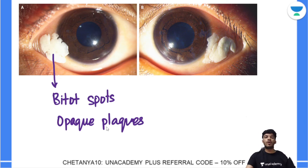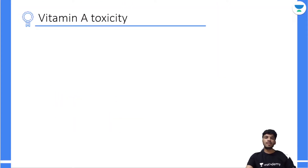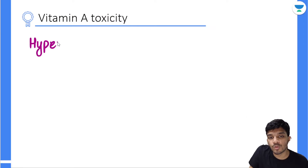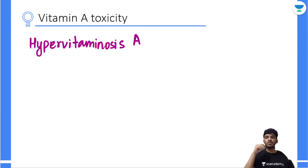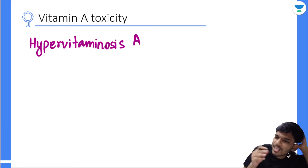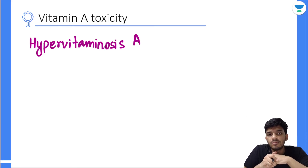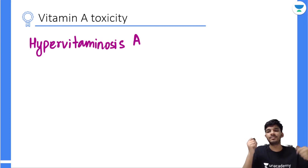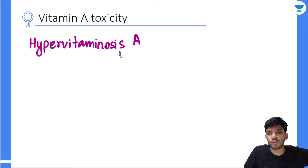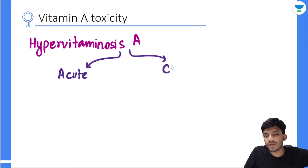That covers Vitamin A deficiency. Now let's move to Vitamin A toxicity, also called hypervitaminosis A. Interestingly, it was discovered by scientists living in Antarctica, where polar bears are found. Polar bear livers are very rich in Vitamin A, and the scientists who ate large amounts of polar bear liver developed symptoms of hypervitaminosis. It can be acute or chronic.